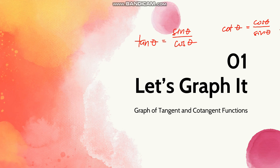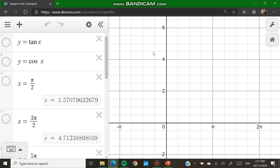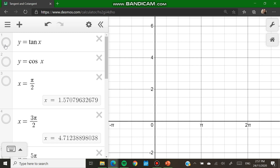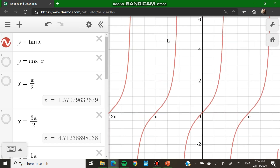This has something to do with the graph. We have to remember that the denominator for tangent is cosine and the denominator for cotangent is sine. So let me show you the graph of the tangent and cotangent functions. Here is our Cartesian plane — let's put here first the graph of tangent x. As you can see, there are still waves here.